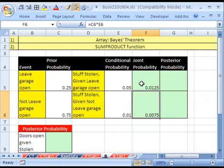Now, these are joint, the AND, and the conditional. Now, posterior probability. This conditional was the probability that stuff is stolen given that we left the garage door open. But now we want to do it in reverse.